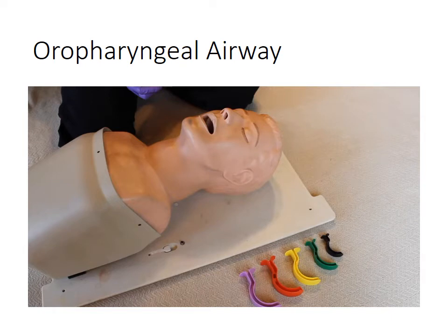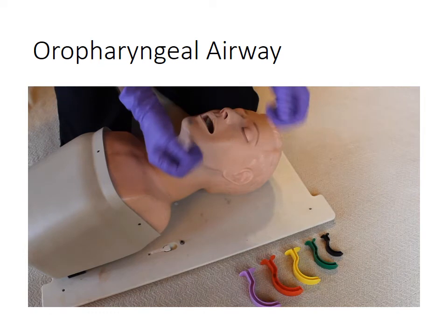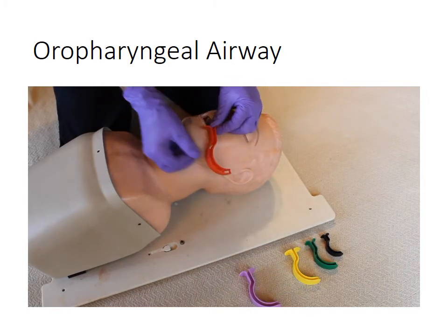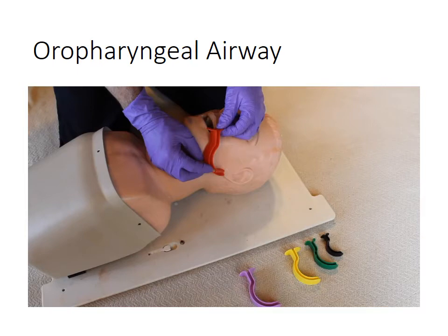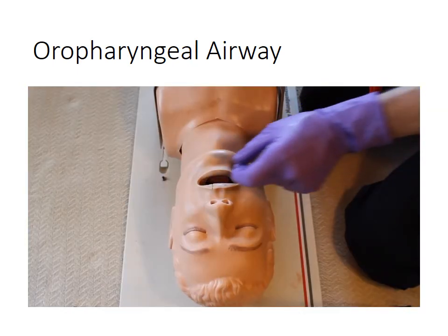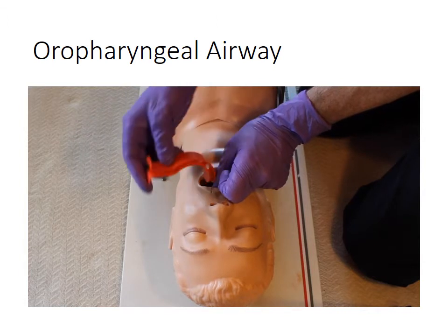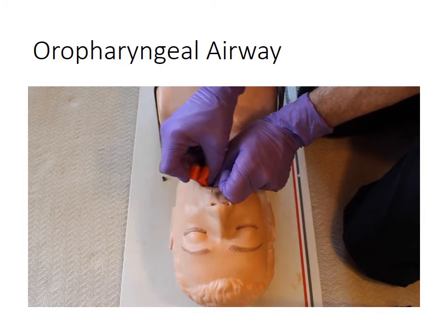This is the National Ski Patrol Outdoor Emergency Care Skill Performance Guideline for inserting an oropharyngeal airway. Initiate standard precautions. Hold the adjunct against the side of the face with the flange adjacent to the corner of the patient's mouth. Size the airway by measuring from the patient's earlobe to the corner of the mouth, or from the corner of the mouth to the angle of the jaw. Open the patient's mouth with the cross-finger technique. Hold the airway upside down, insert with the tip facing the roof of the mouth, and slide it in until it is halfway into the mouth. Rotate the airway 180 degrees, then insert until the flange rests on the patient's lips.